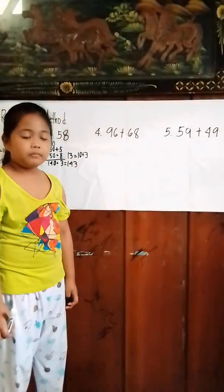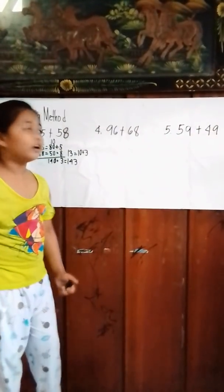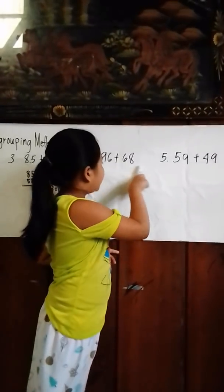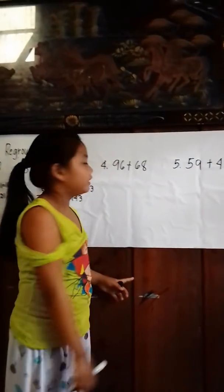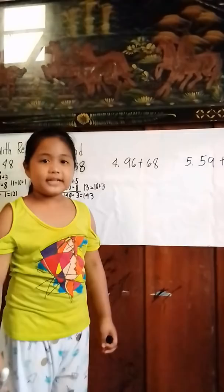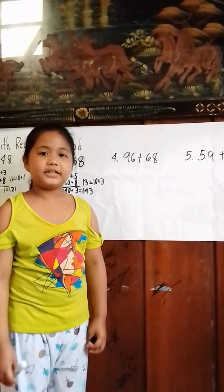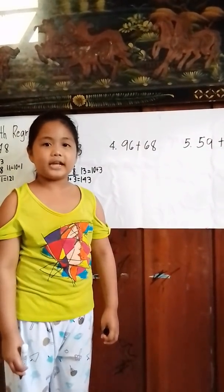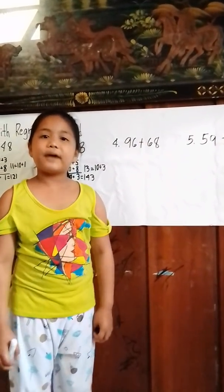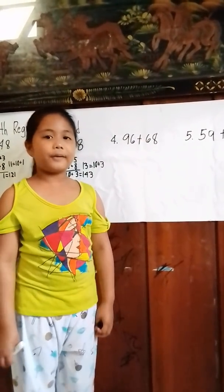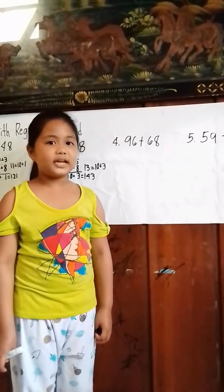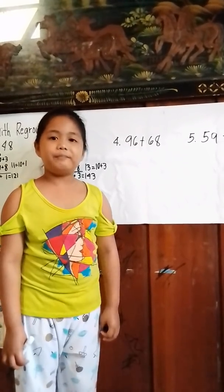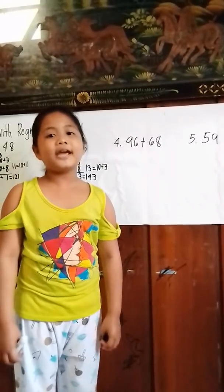Number 4: 96 plus 68. What is the regrouping of 96 and 68? Let's find out. The regrouping of 96 is 90 plus 6.